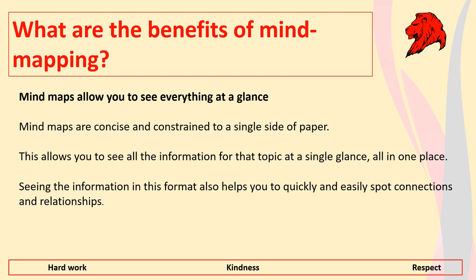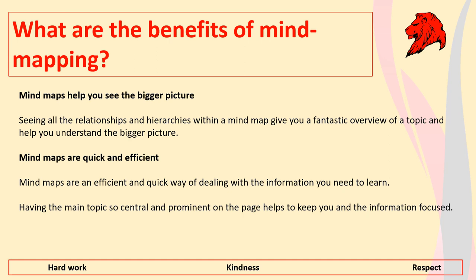Another benefit is that you see everything at a glance. It's on one single side of paper, and things look a lot more manageable when they're on one piece of paper in front of you in terms of revision. It helps you to quickly and easily spot connections between relationships in a big idea, or between things that you've already studied before, and it helps your mind to make all those connections it needs to in order to remember information.